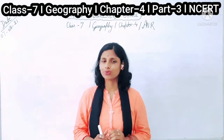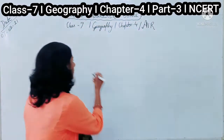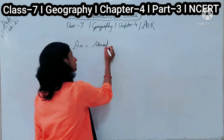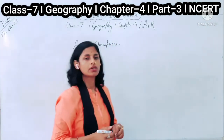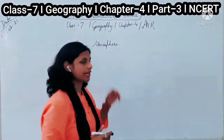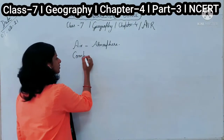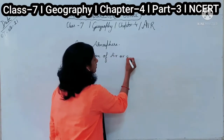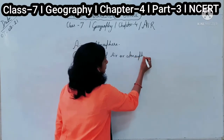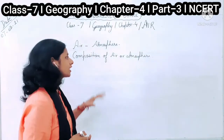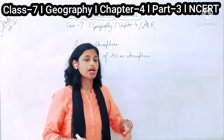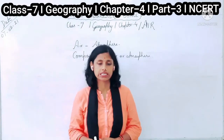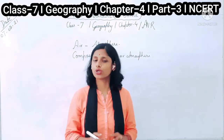In this chapter, we have already discussed about the air and what is atmosphere. The thin blanket of air is known as the atmosphere. We have also discussed about the composition of air or atmosphere, which contains many gases with different proportions and different properties. All these gases are very important for the survival of human beings.